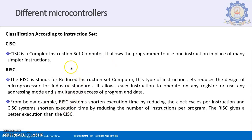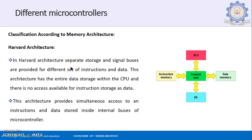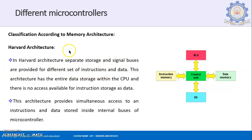Moving to our next topic, microcontrollers can also be classified based on architecture. There are two types: Harvard architecture and Von Neumann architecture. In Harvard architecture, separate storage and signal buses are provided for different sets of instructions and data — you have separate buses for storage and signals.